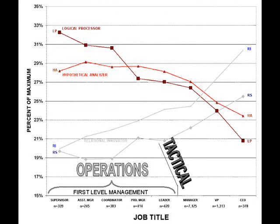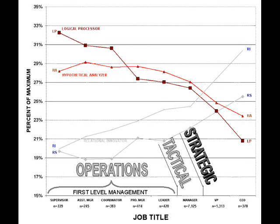With managers, the job changes from an operational to a tactical accent. Managers must respond to changing situations, often without full knowledge of the particulars or options. Less knowledge means that predictability declines, and with it, the value of the LP and HA styles. At the VP level, the focus shifts from tactics to strategy — involving general plans that attempt to create favorable future situations. Strategy must extend further into the future than tactics. Uncertainty increases, and the value of structured styles again declines.